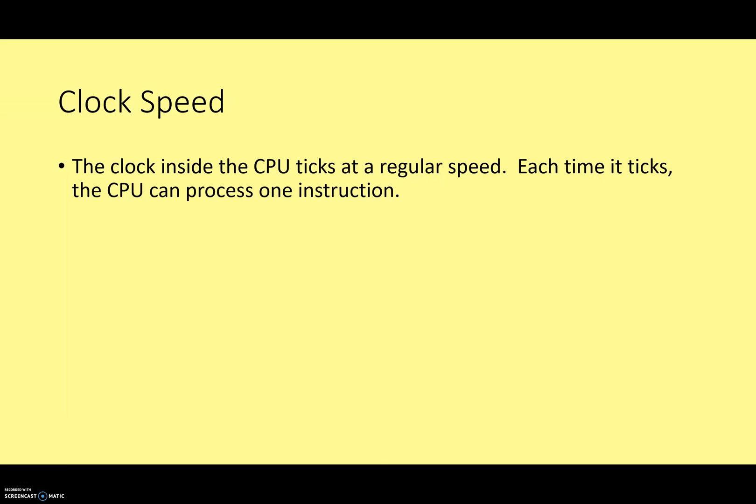All right, clock speed. The clock inside your CPU ticks at a regular speed. Each time it ticks, each time it completes one cycle, the CPU can process one instruction. So if your CPU runs at three gigahertz, the clock will tick three billion times a second and roughly speaking you can carry out three billion instructions.